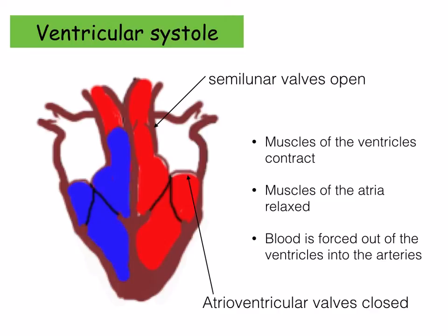Then you've got ventricular systole, the last stage. This is when the muscles of the ventricles contract, forcing the blood out of the ventricles into the arteries. The semilunar valves are opened by the pressure of the blood as it is forced into the arteries. The atrioventricular valves — your bicuspid and tricuspid valves — are closed, preventing backflow of blood into the atria. Notice how the tendons of the atrioventricular valves are tight, preventing the valves from prolapsing backwards into the atria.